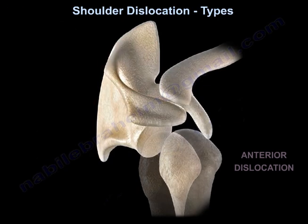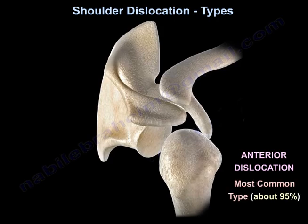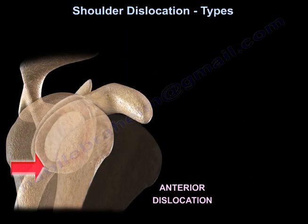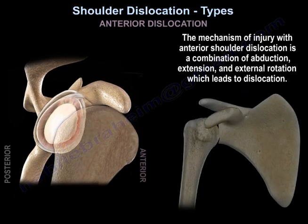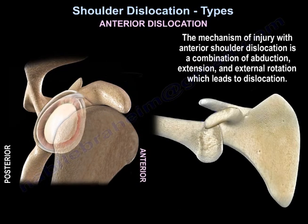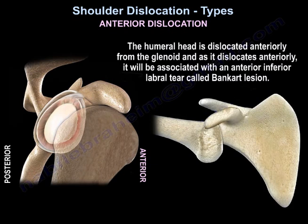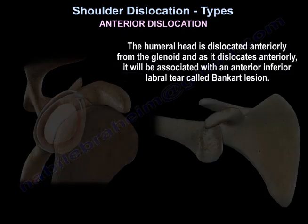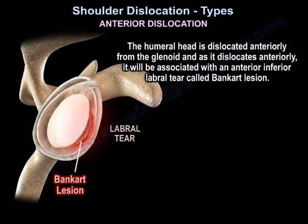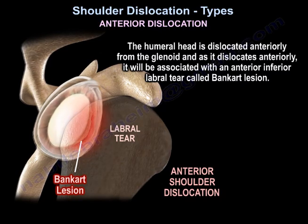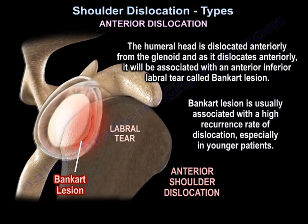The anterior shoulder dislocation is the most common type — about 95% of all shoulder dislocations. The mechanism of injury is a combination of abduction, extension, and external rotation. The humeral head is dislocated anteriorly from the glenoid, and as it dislocates anteriorly, it will be associated with an anterior inferior labral tear called a Bankart lesion.